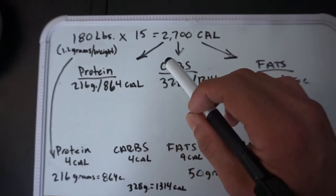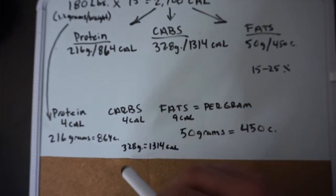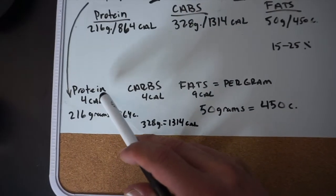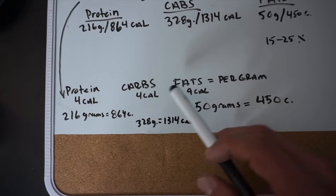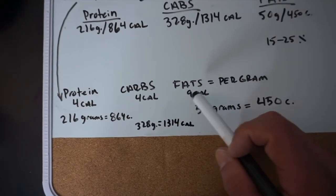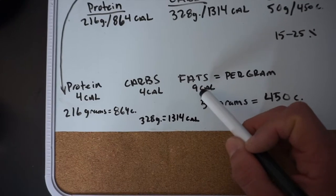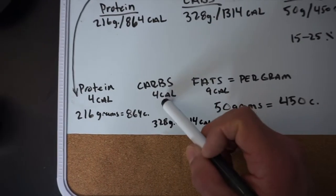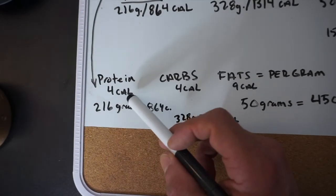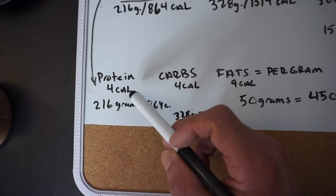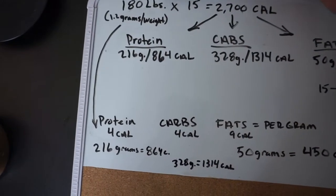Before we go on, let me explain what your macros are going to be. Macros are pretty much just your protein, your carbs, and your fats. Here's a breakdown of calories per gram: in one gram of fats there are 9 calories, in one gram of carbs there are 4 calories, and in one gram of protein there are 4 calories as well.